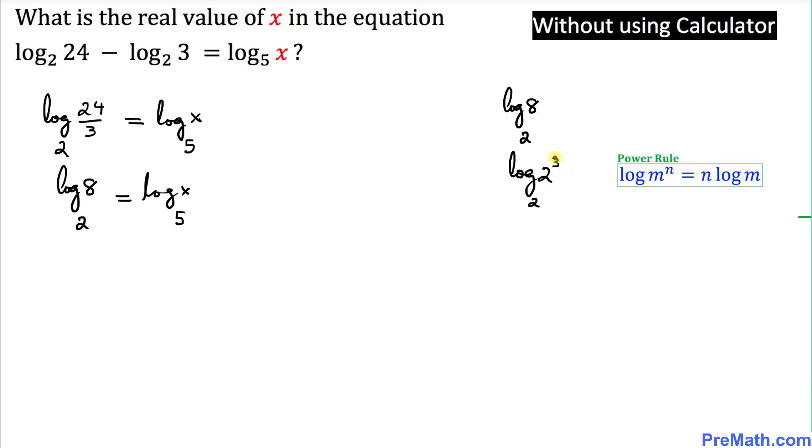And as we can see that 3 is our exponent, so we are going to use this power rule. Log of m power n equal to n log of m. That means this exponent we are going to drag it to the front. So this could be written as 3 log of 2 with a base 2.